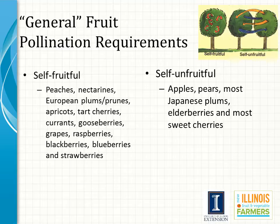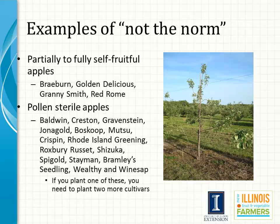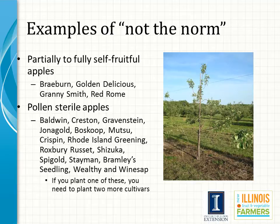Pollination is an important factor when selecting and planting tree fruit and small fruit. A list of generalized pollination requirements for the various fruits is presented here. Generalities about fruitfulness were listed for different fruit, but understand exceptions commonly occur among cultivars of a particular fruit. Many apples are self-unfruitful, but there are cultivars that are partially self-fruitful, fully self-fruitful, and also cultivars that are pollen sterile. Most nursery catalogs provide information about fruitfulness and which cultivars are recommended for pollinating each other.